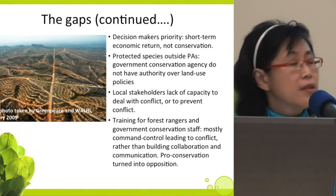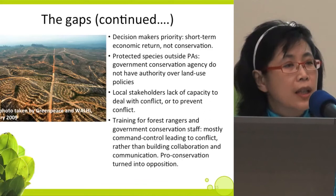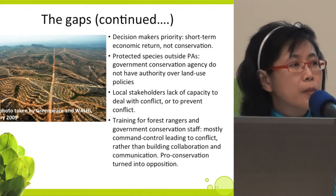More gaps: decision makers' priority is short-term economic return, not conservation. Protected species outside protected areas are a problem because government conservation agencies do not have authority over land use policies, so a lot of habitat for protected species is converted for economic development under the authority of district and national government rather than the conservation agency. Local stakeholders lack the capacity to deal with or prevent conflict. Training for forest rangers and government conservation staff is mostly command-and-control, leading to more conflict rather than building collaboration and communication. There is a recent example where pro-conservation local people turned into opposition because of this misleading training concept.